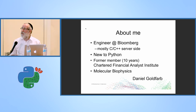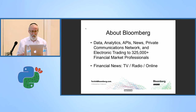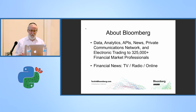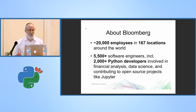A little bit about me: I'm an engineer at Bloomberg. I spent most of my career doing C and C++ on the server side. I was a member of the Chartered Financial Analyst Institute for 10 years and started my career in biophysics. Bloomberg provides services to several hundred thousand financial market professionals, has about 20,000 employees in 167 locations worldwide, including Tel Aviv and Jerusalem, and over 5,500 software engineers — more than 2,000 of them involved with Python.